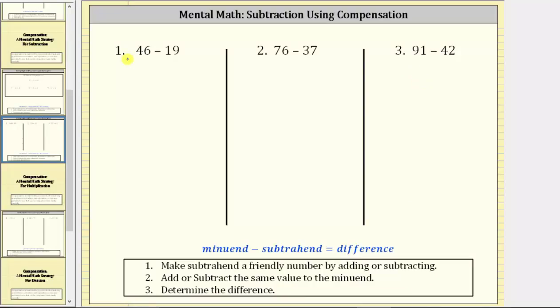In our first example, we have 46 minus 19. The first step is to make the subtrahend, which is the number we are subtracting, a friendly number by adding or subtracting. So because it's much easier to subtract 20 than 19, the first step is to add one to 19.